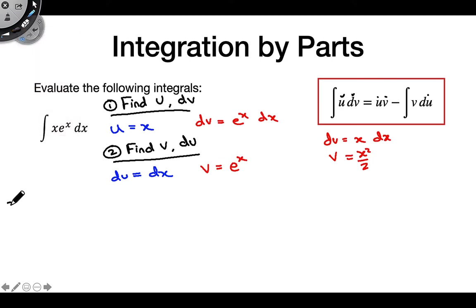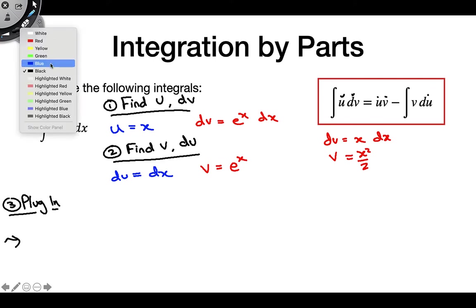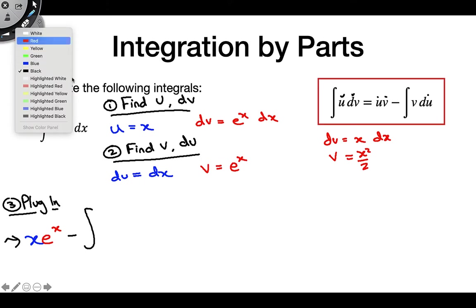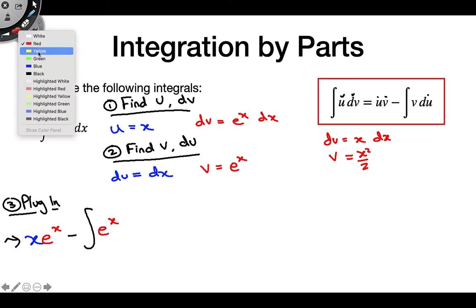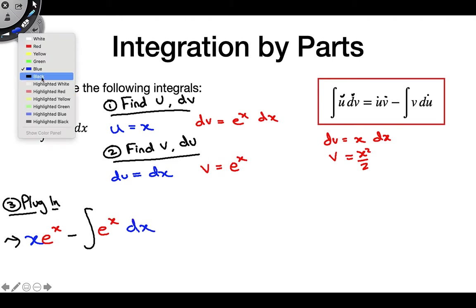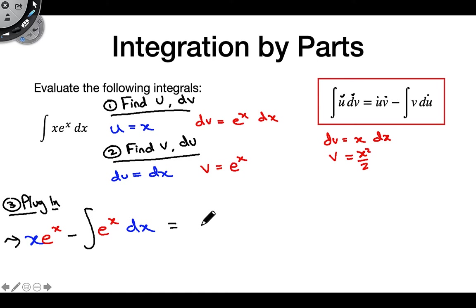Now all we have to do is plug everything into the formula. We have uv — u is x, v is e^x — minus the integral of v du: e^x dx. We just evaluate that integral: the integral of e^x is e^x. So our final answer is x·e^x minus e^x plus c, and we do need the plus c for this final integral.